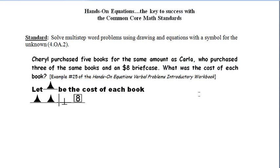So if two blue pawns are eight, that means that each one is going to be worth four. So we have that the pawn is worth four. We haven't answered the question—the pawn is the cost of each book, that's what we said over here. So now we can write: the cost of each book is four dollars.